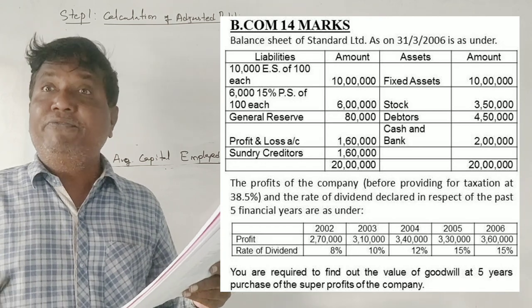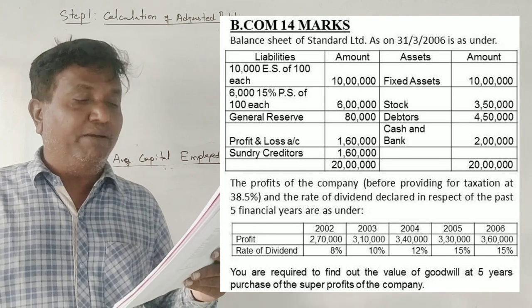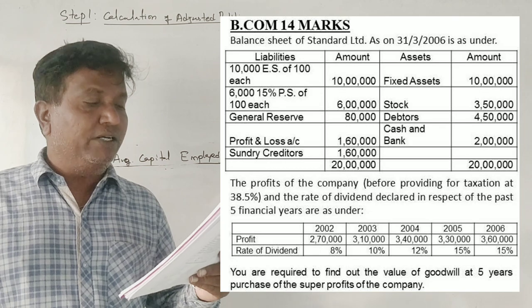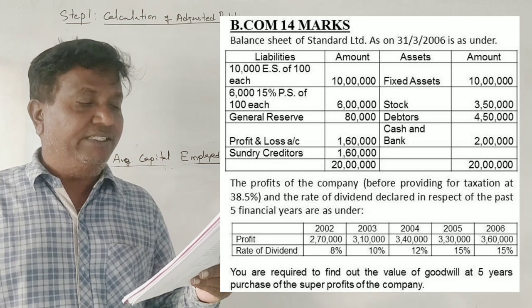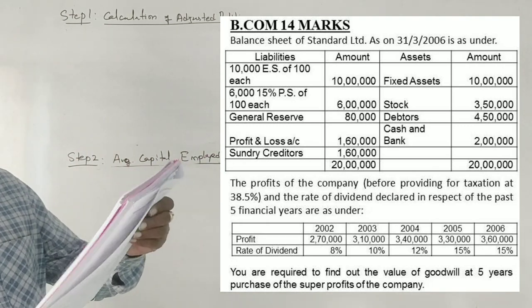Profits of the company before providing taxation at 38.5% and the rate of dividend declared in respect of the past 5 financial years are as under. You are required to find out valuation of goodwill at 5 years purchase of super profit.